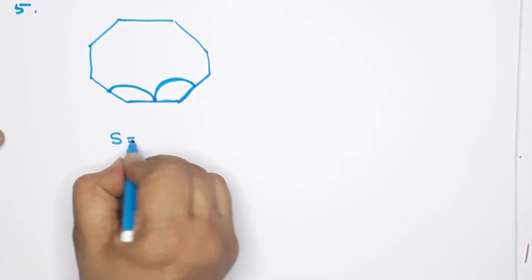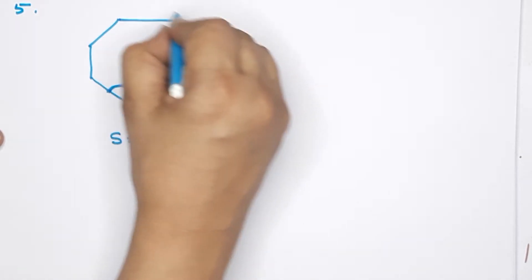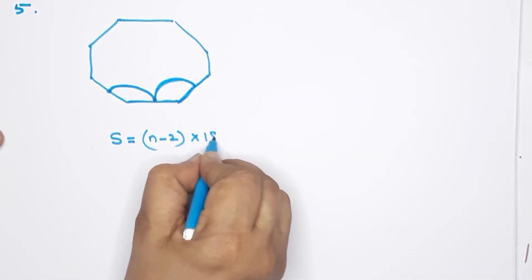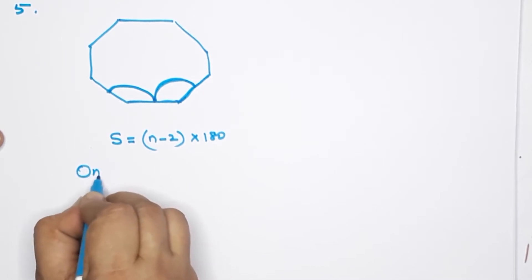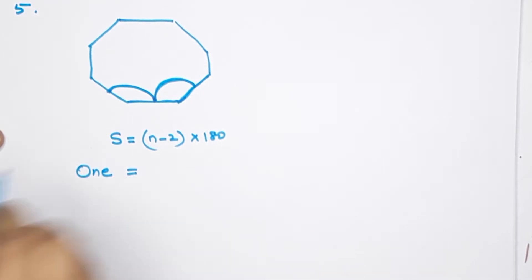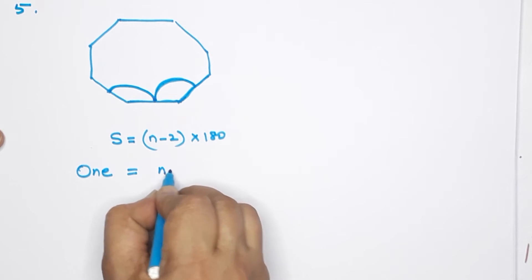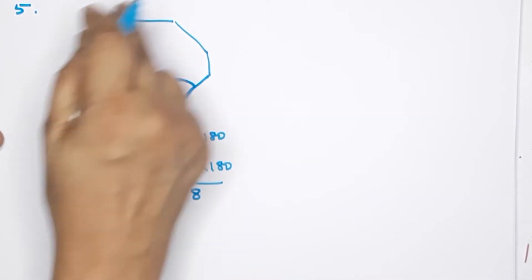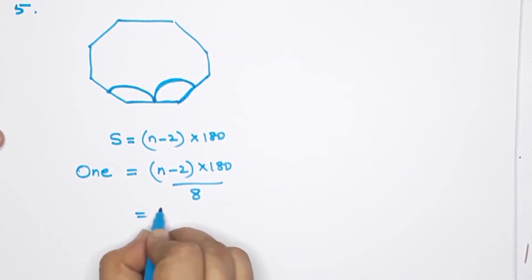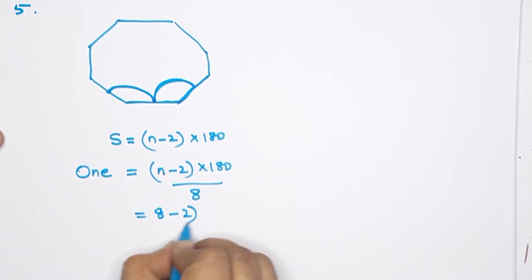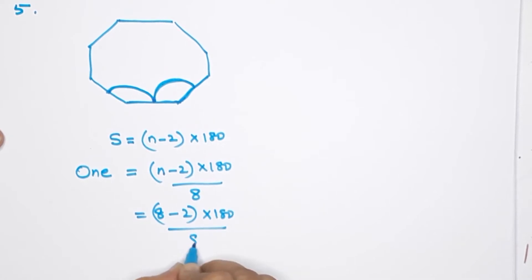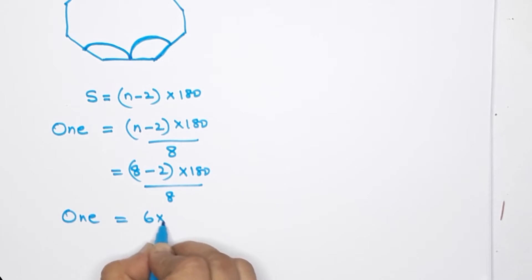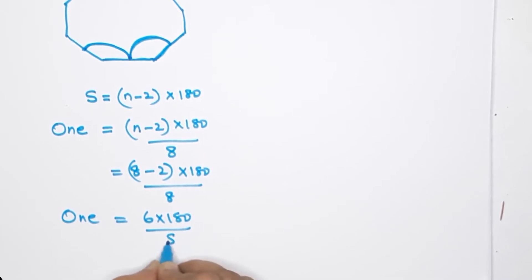The octagon has a sum of interior angles given by (n − 2) × 180 degrees. For a regular octagon, that is (n − 2) × 180 ÷ 8, because there are 8 sides: (8 − 2) × 180 ÷ 8 = 6 × 180 ÷ 8. That gives one interior angle.